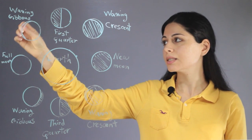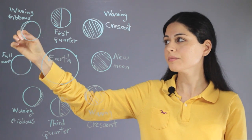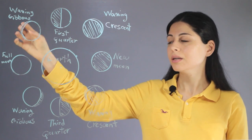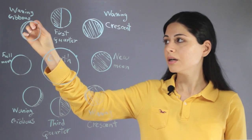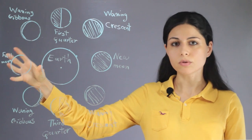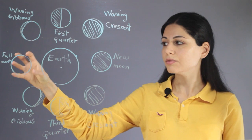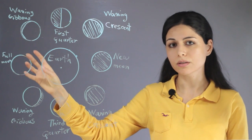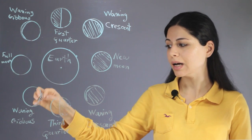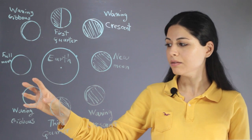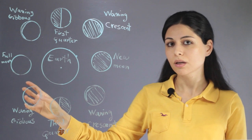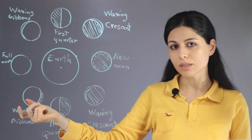The next phase is waxing gibbous. In the waxing gibbous phase, most of the moon is bright except for a narrow part, so we see the moon as a slightly incomplete sphere where this part is dark. The next phase is the full moon — in the full moon, the moon is completely bright in the sky and we see all parts of the moon.